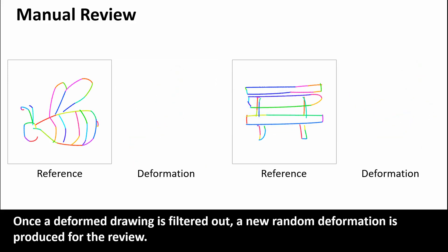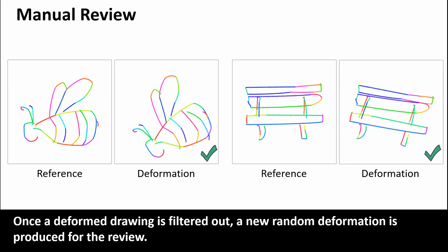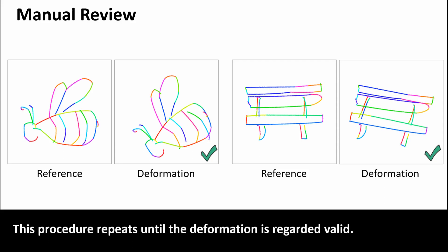Once a deformed drawing is filtered out, a new random deformation is produced for the review. This procedure repeats until the deformation is regarded valid.